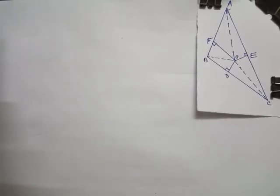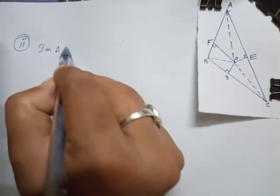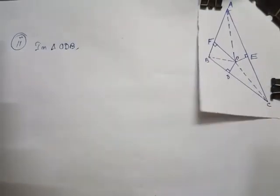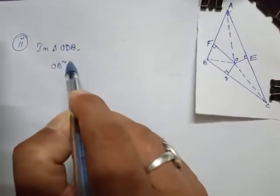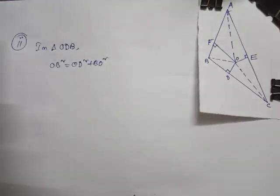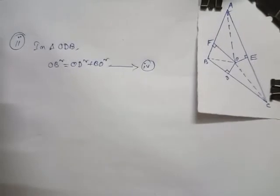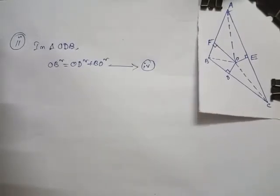Now we are going to solve Exercise 6.5, Question 8, Roman II — the second portion. As you can see in the video, in triangle ODB, this is a right angle, making OB the hypotenuse. So OB² = OD² + BD². This is equation number 4, continuing from equations 1, 2, 3 of the first part.